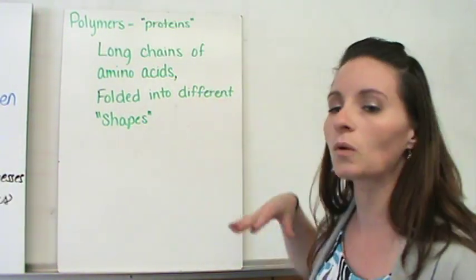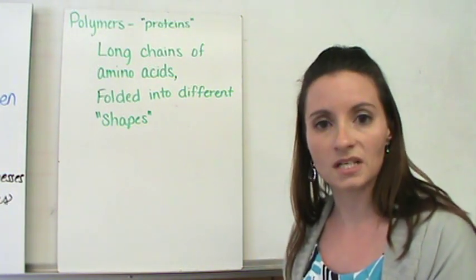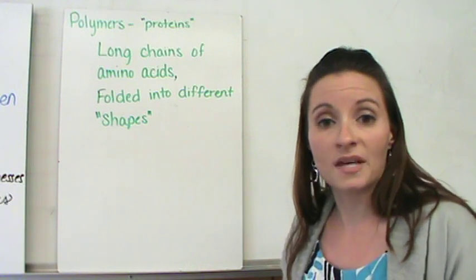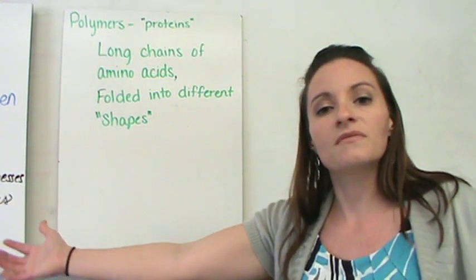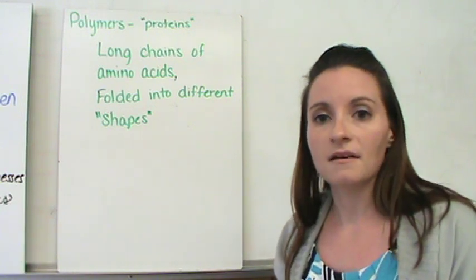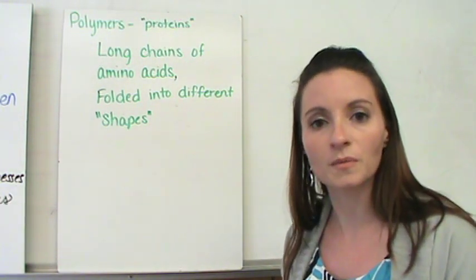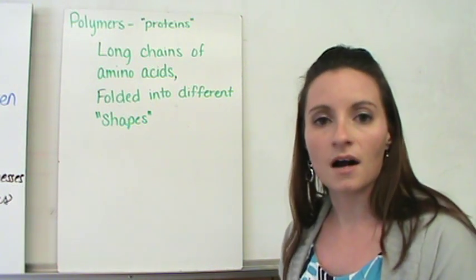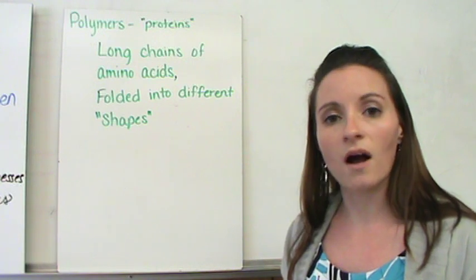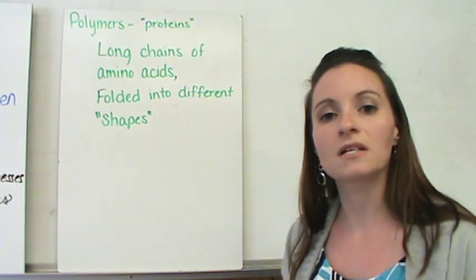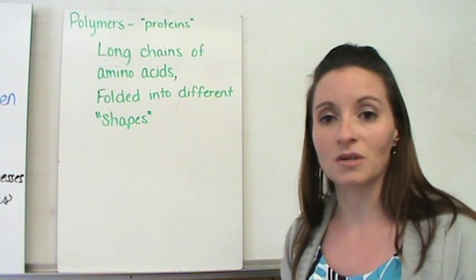And these proteins then get folded into lots of different shapes. And each of those proteins become basically a different protein. So, we might have the exact same chain of amino acids, but if it gets folded in a different way, it's known as a different type of protein, which would have a different function within your body, which would then do something different. Which is another reason why we can only have 20 amino acids that make up so many different proteins within our body.